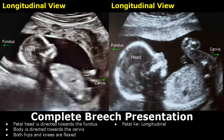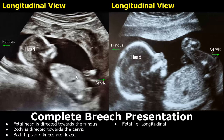We move on to breech presentation, in which the fetal head is directed towards the fundus and the fetal body and legs are directed towards the cervix. If this presentation is seen near the end of pregnancy, a C-section is preferred for delivery. Breech presentation has a few types. The first one is complete breech presentation, where both the hips and knees are flexed. We see folded legs and flexed hips directed towards the cervix. The fetal lie is longitudinal — in a longitudinal view of the uterus, the fetus is also in a longitudinal orientation.